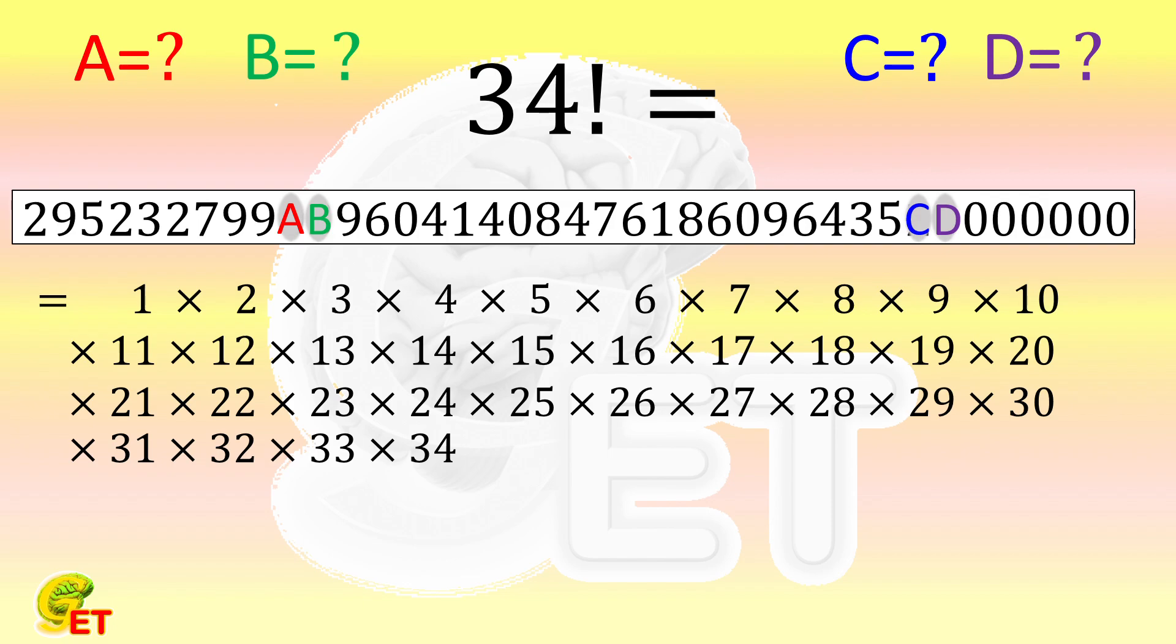Roughly speaking, the positions of C and D are close to the end of the number, whereas the positions of A and B are in the middle. To figure out the digits close to the end of a number, we usually first consider the factors 2 and 5. In particular, we first care about how many digits 0 are there at the end of a number.